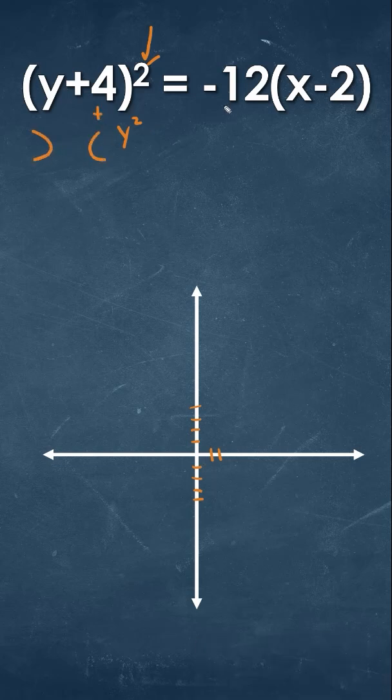If it's a positive value for the 4p, which we have is 12, if it's positive it'll go to the right and negative it'll go to the left. Since we have 4p is equal to negative 12, that's going to tell us that our p value is going to be negative 3. So it is going to open up to the left.